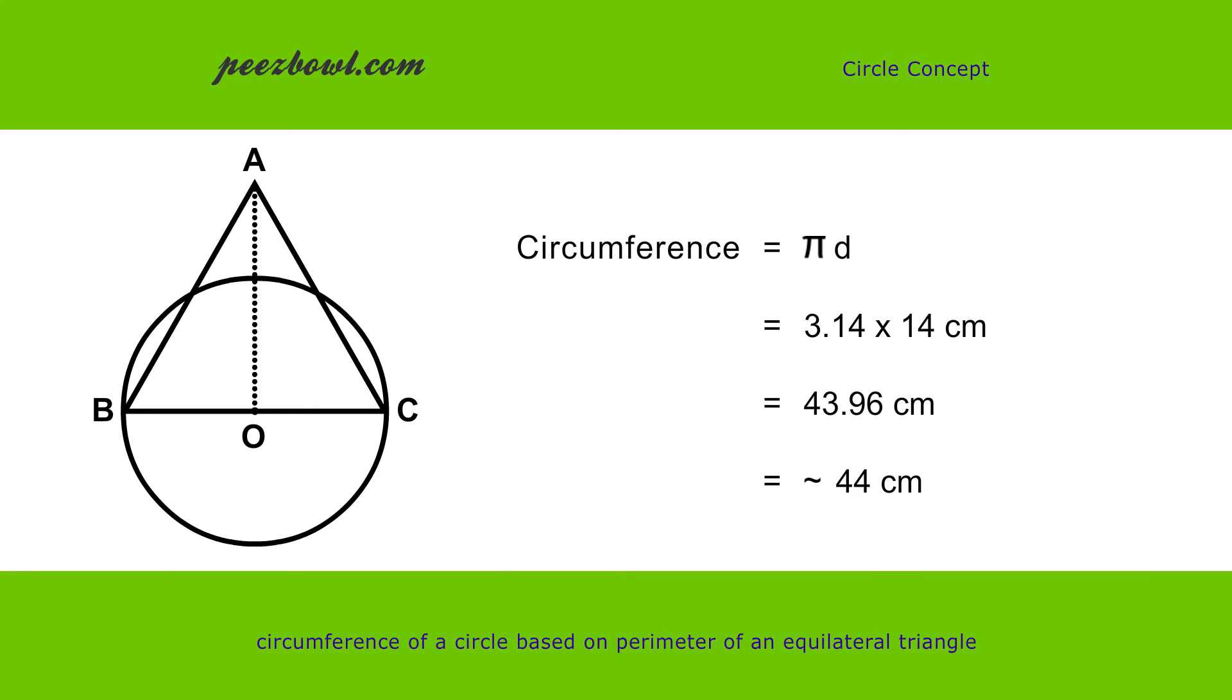Or approximately 44 cm. In this case, if we place value of pi as 22 upon 7, then the circumference of the circle would be exactly 44 cm.